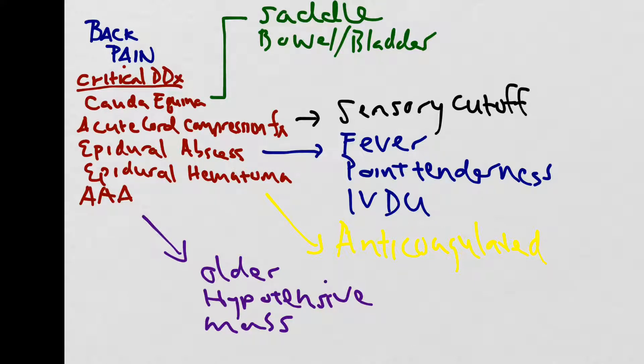For the workup, if you're considering any of the critical differential diagnoses such as cauda equina, acute cord compression from pathologic fracture or traumatic fracture, epidural abscess, or epidural hematoma, you should jump straight to an MRI if possible.